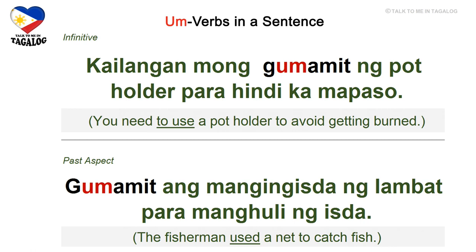Infinitive: kailangan mong gumamit ng potholder para hindi ka mapasok. Kailangan means need, gumamit is to use, hindi is not, and mapasok means to get burned — you need to use a potholder to avoid getting burned.